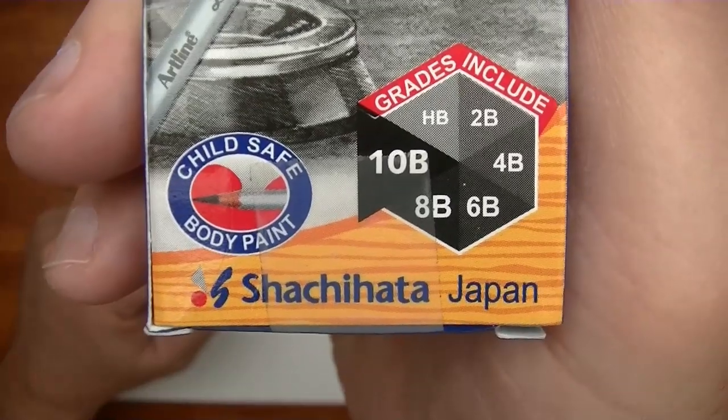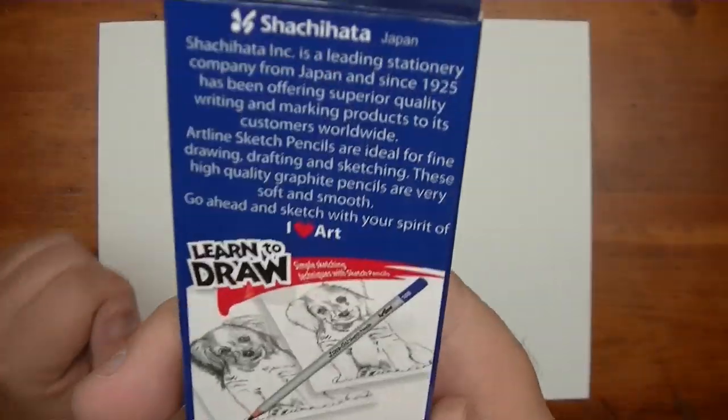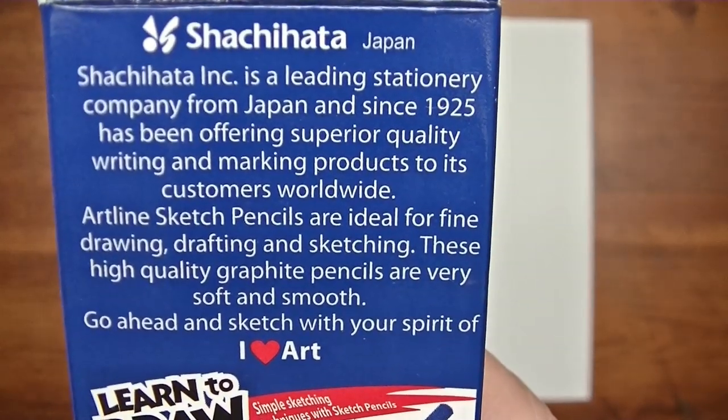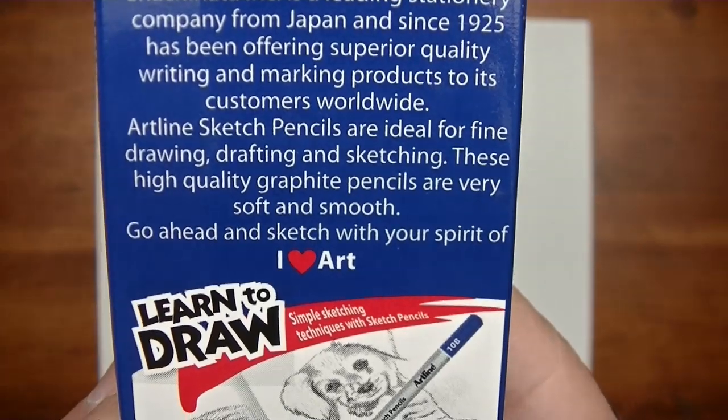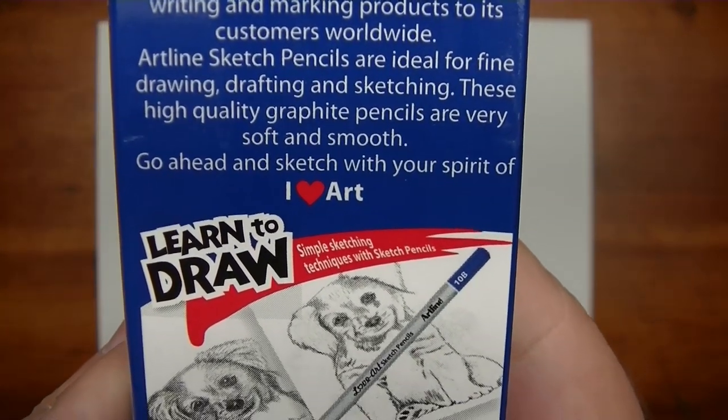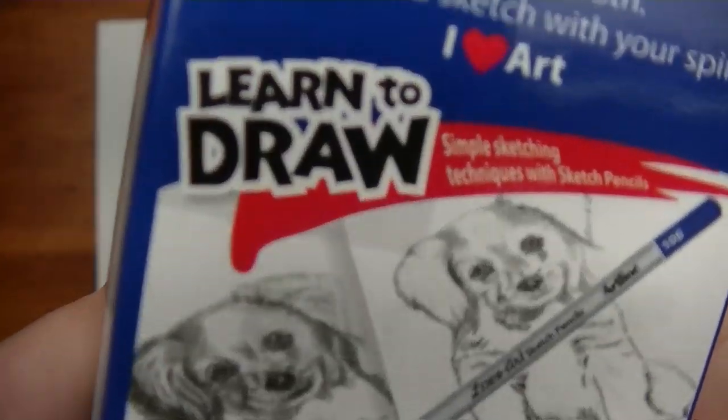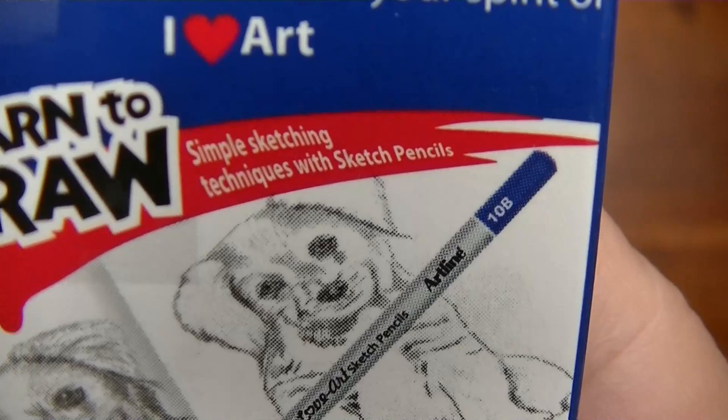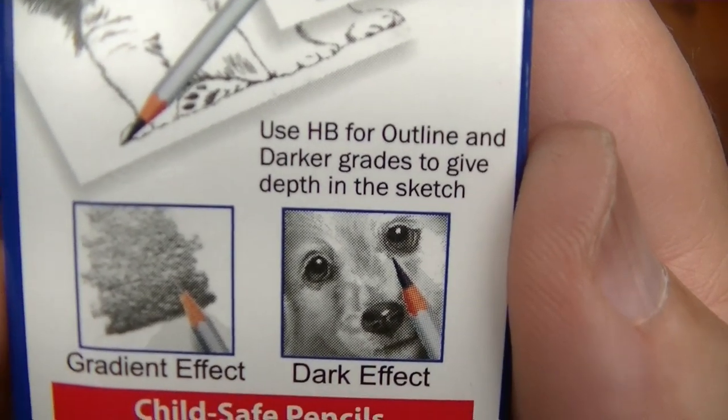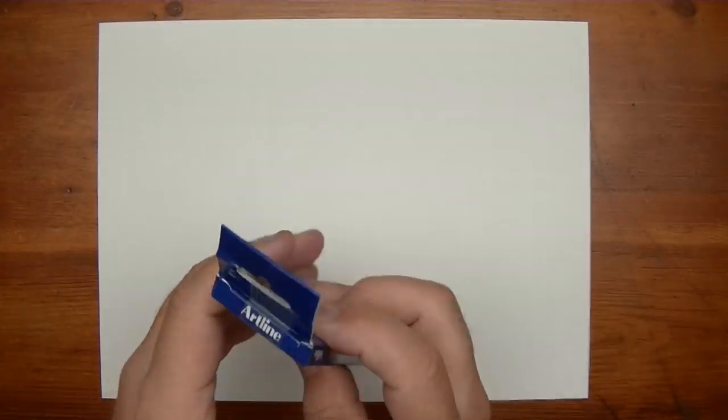Now these pencils here look like they come from, looks like it says Shachihata, Japan. And in the back it reads a little bit about that. It says Shachihata Incorporated is a leading stationary company from Japan and since 1925 has been offering superior quality writing and marking products to its customers worldwide. Artline sketch pencils are ideal for fine drawing, drafting, and sketching. These high quality graphite pencils are very soft and smooth. Go ahead and sketch with your spirit of I love art. Learn to draw. That's great advice. Simple sketching techniques with sketch pencils. Use HB for outline and darker grades to give depth in the sketch. There's your gradient effect, dark effect, and their child safe pencils.